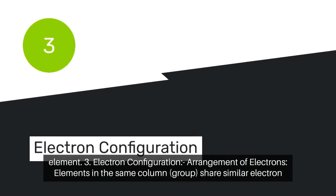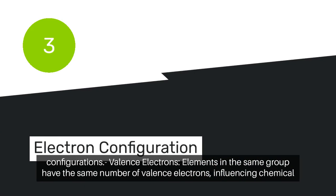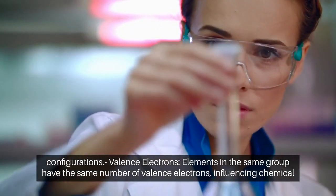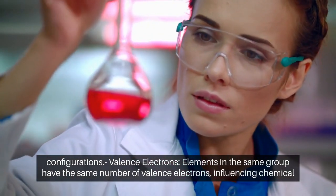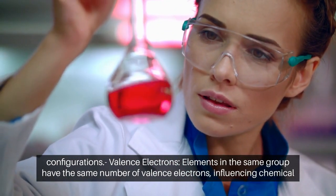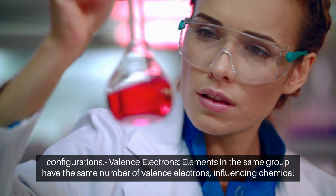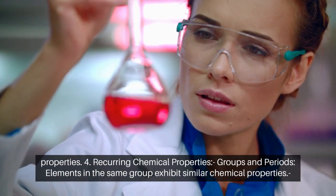Electron Configuration. Arrangement of Electrons: Elements in the same column, or group, share similar electron configurations. Valence Electrons: Elements in the same group have the same number of valence electrons, influencing their chemical properties.